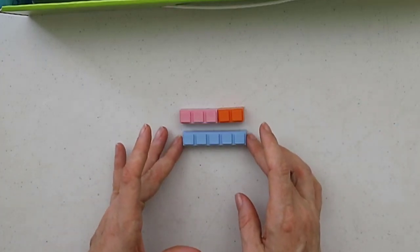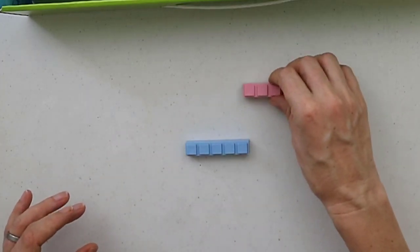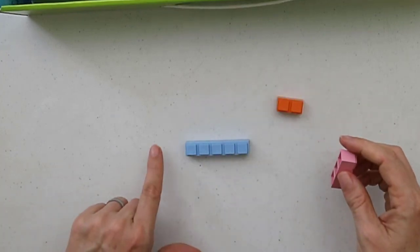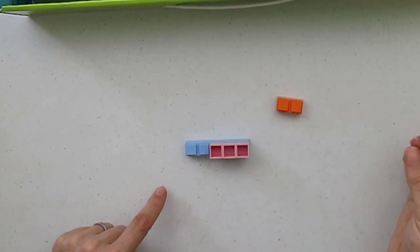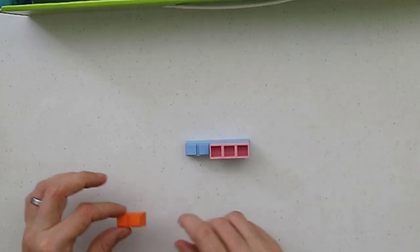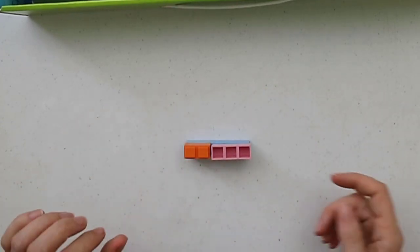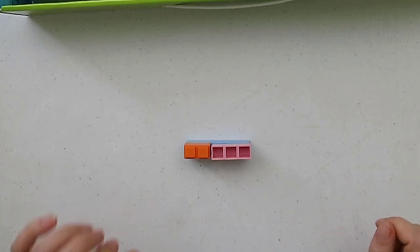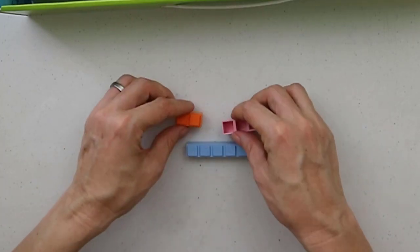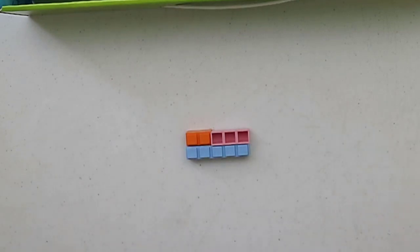For subtraction you might have the sum five take away three and what they get you to do for that is to put this upside down and then you see what you've got left. That two block fits in nicely there so five take away three must equal two, and you can also do these next to it as well.